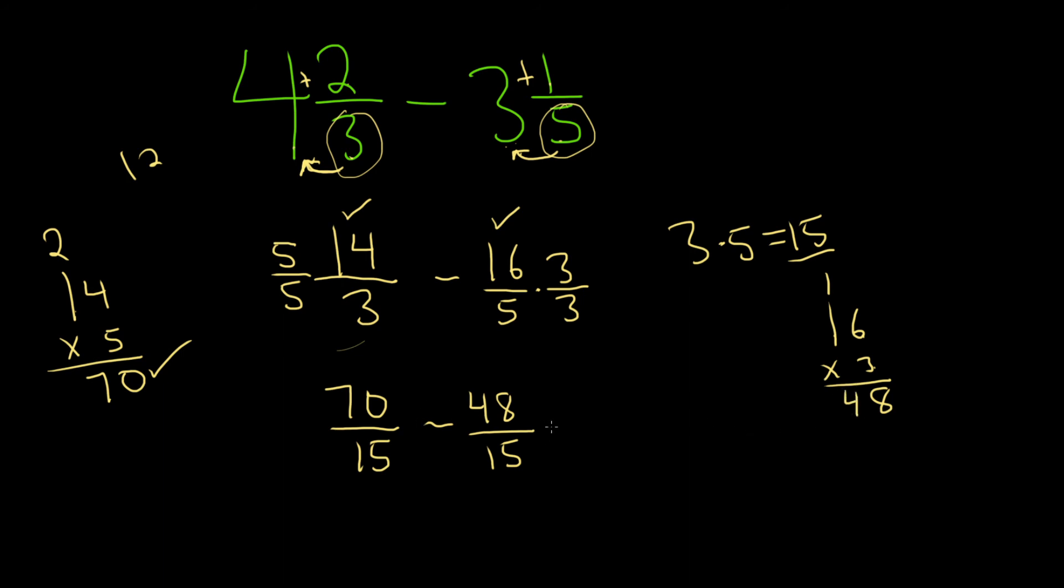70 minus 48 is 22. And we get 15. So you could leave it like this. This is called an improper fraction, because the numerator is bigger than the denominator.